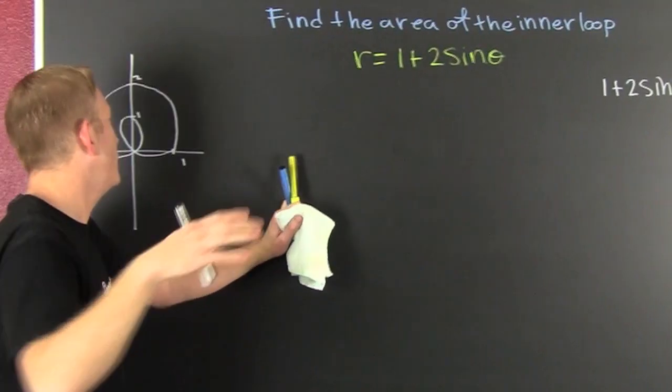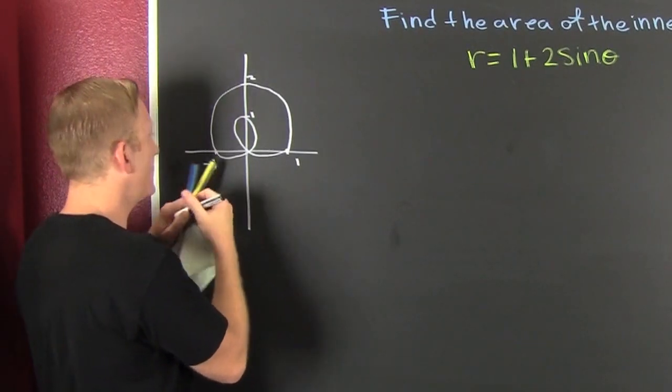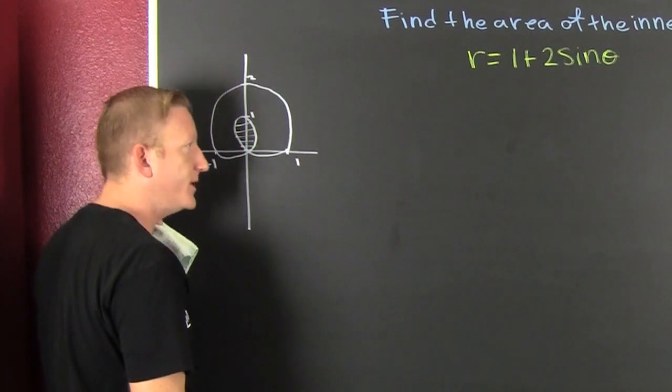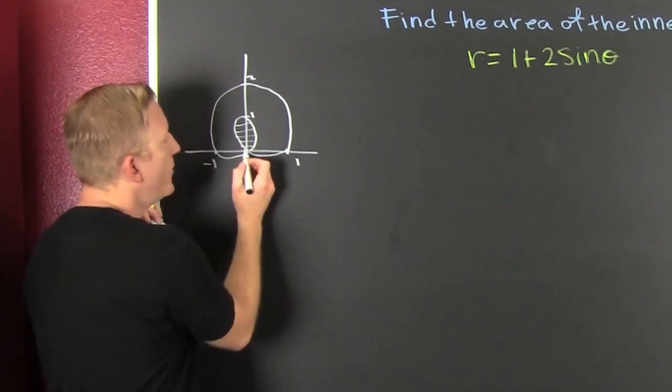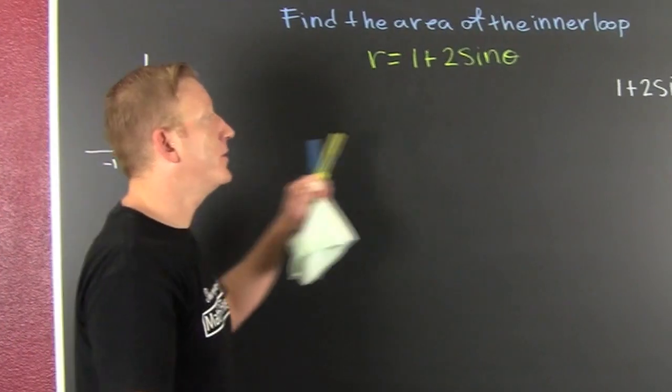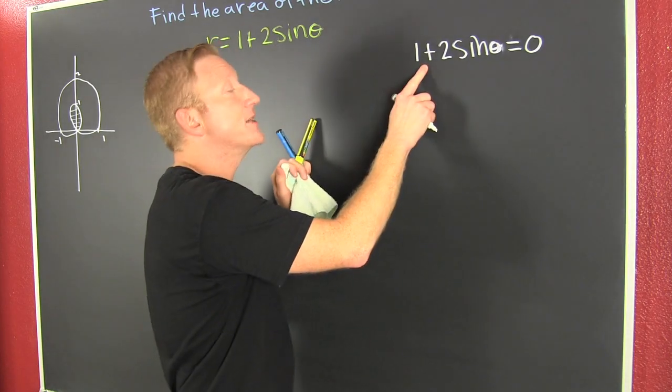And further, when we go and we graph that guy, we see it's a limaçon. And what are they looking for? They're looking for the area of this one loop. In order to get the area of that one loop, we need to find this guy so that we can properly integrate. In order to find that guy, we need to find where r is going to be 0.